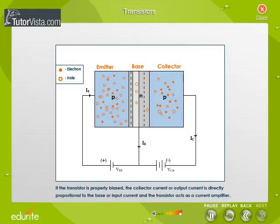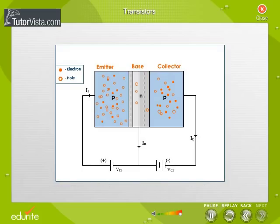If the transistor is properly biased, the collector current or output current is directly proportional to the base or input current and the transistor acts as a current amplifier. Thus, the transistor may be used to amplify a small signal.